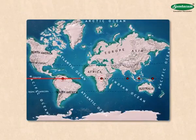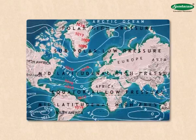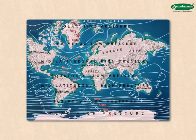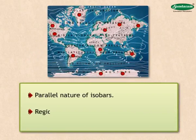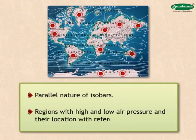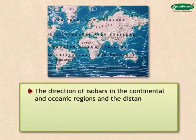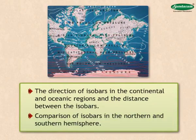Isobars. A line joining the places on the map with the same air pressure is called an isobar. This figure shows the world distribution of mean annual air pressure with the help of isobars. The values of air pressure are mentioned on the isobars. Let us study this map based on the following points: parallel nature of isobars, regions with high and low air pressure and their location with reference to latitudes, the direction of isobars in the continental and oceanic regions and the distance between the isobars, comparisons of isobars in the northern and southern hemisphere.